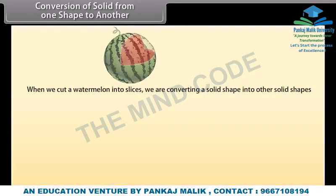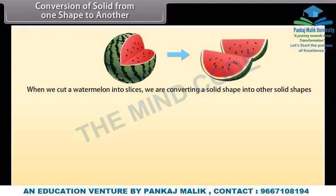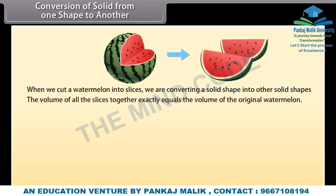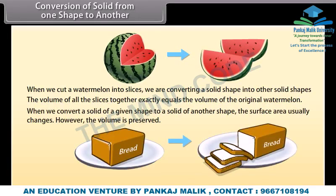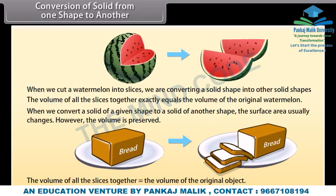Conversion of solid from one shape to another: When we cut a watermelon into slices we are converting a solid shape into other solid shapes. Regardless of the size and shape of the slices, one fact holds true: the volume of all the slices together exactly equals the volume of the original watermelon. When we convert a solid of a given shape to a solid of another shape, the surface area usually changes; however, the volume is preserved.